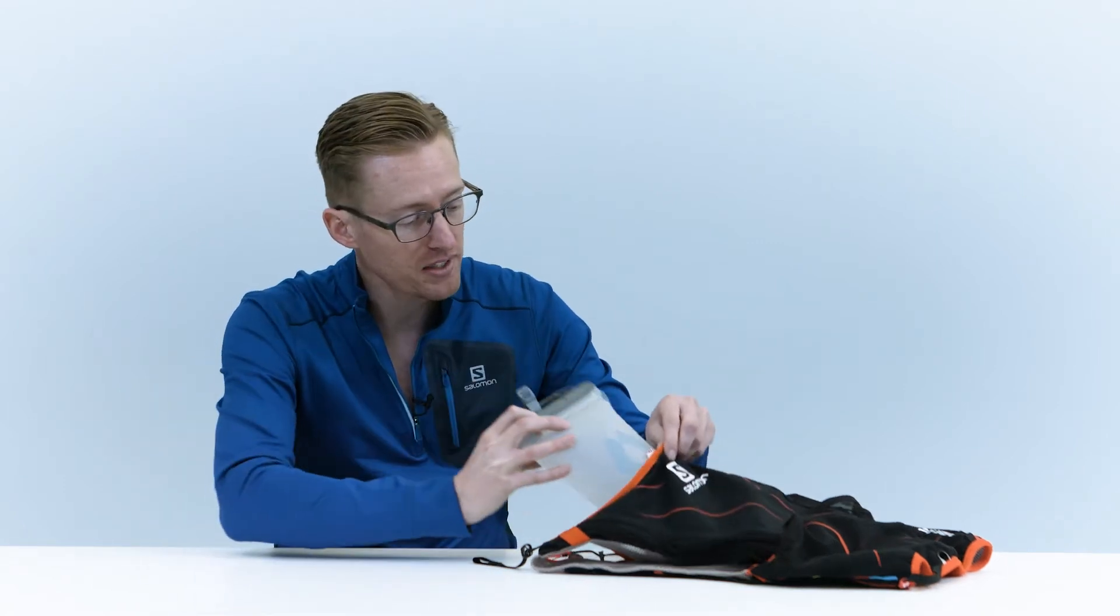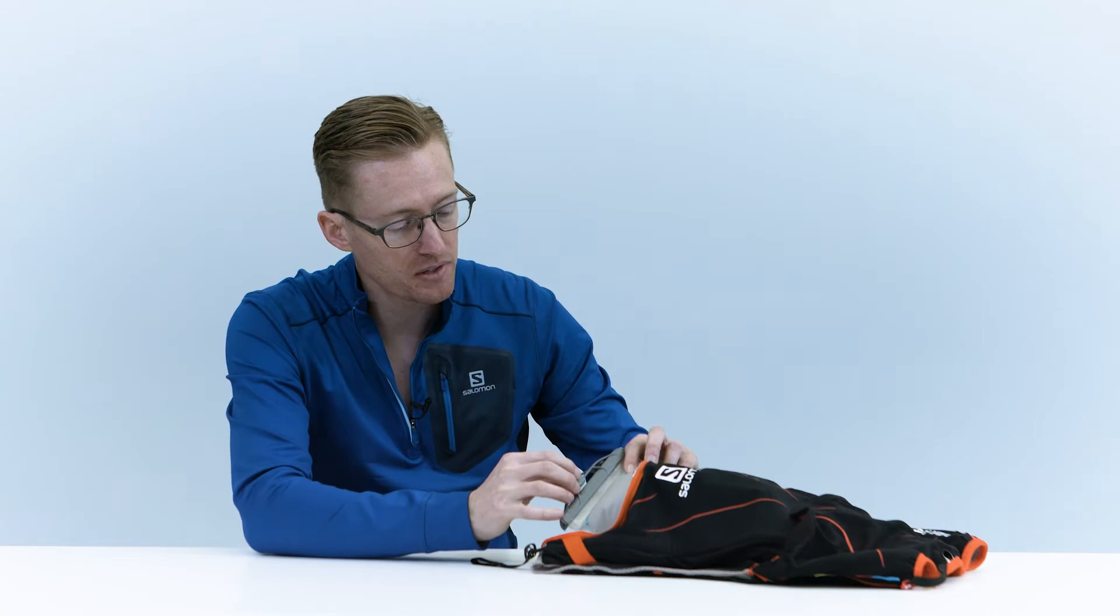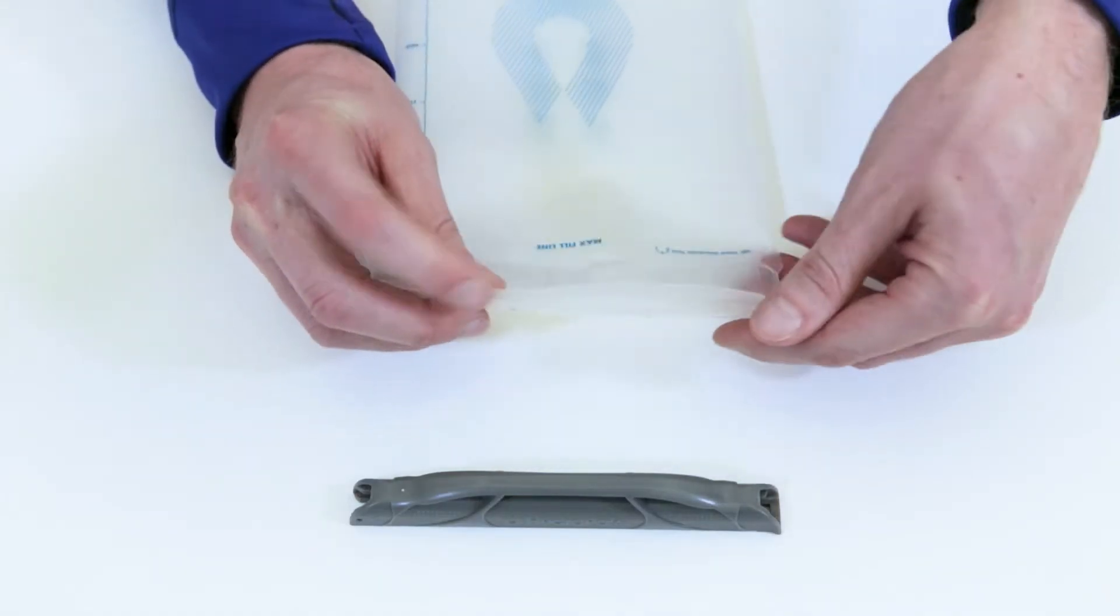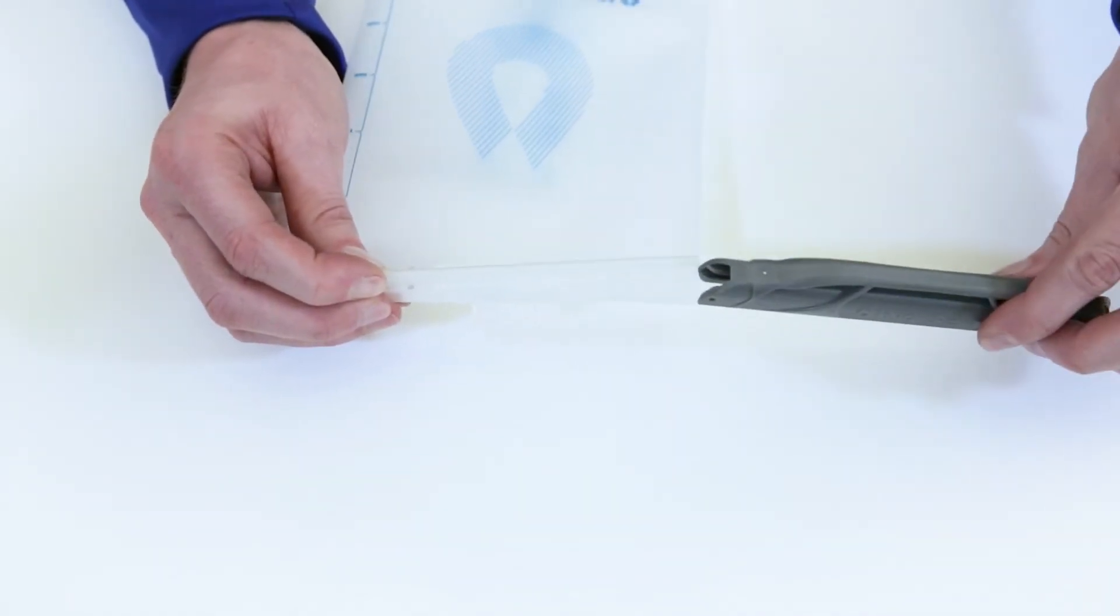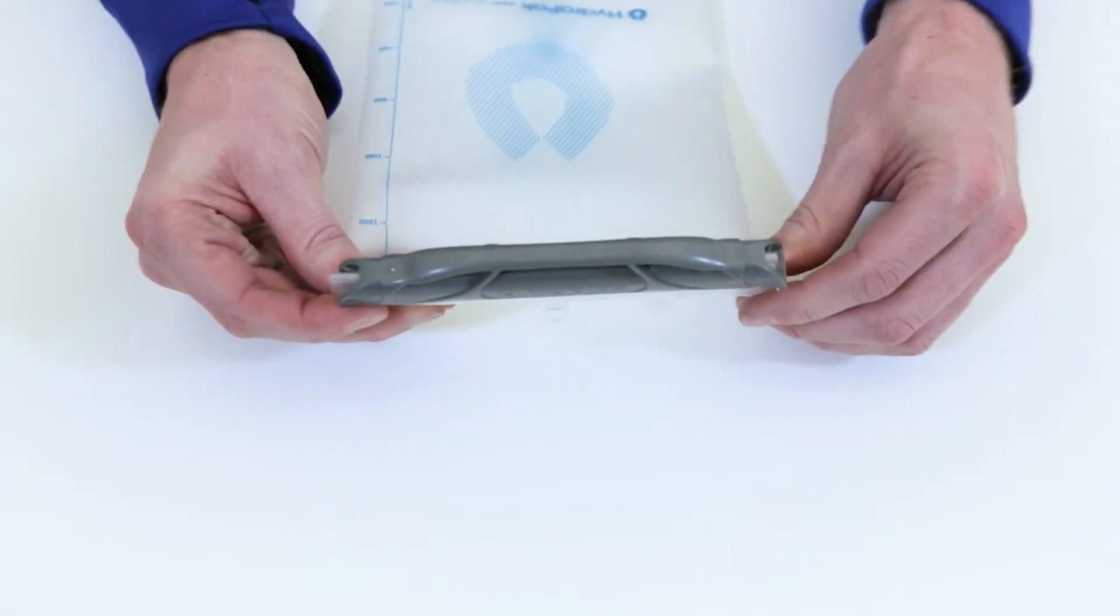It fits snugly in most running packs and vests, and an optional clip provides secure attachment. The patented slide seal top opens wide for easy filling and closes tight for a leak-proof seal you can depend on.